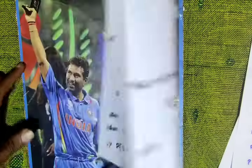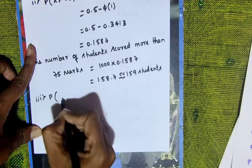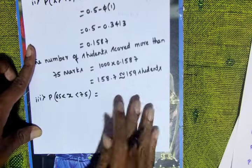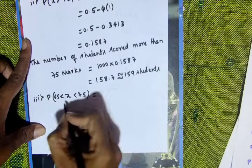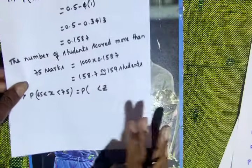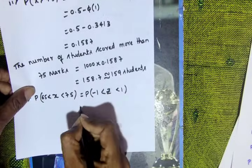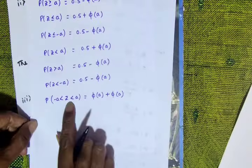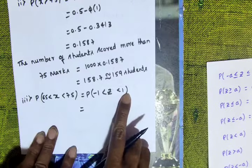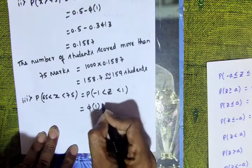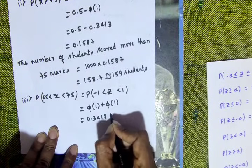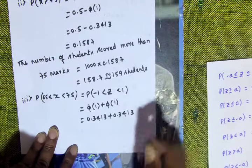Third question: between 65 and 75. P(65 less than X less than 75) equals P(minus 1 less than Z less than 1), which equals phi of 1 plus phi of 1. That equals 0.3413 plus 0.3413 equals 0.6826.